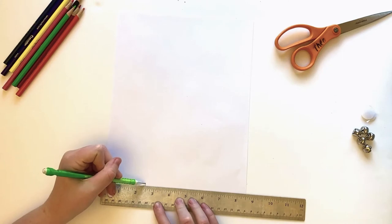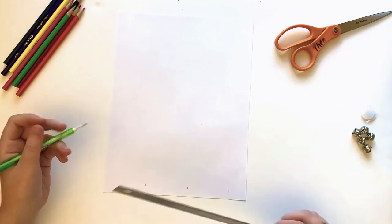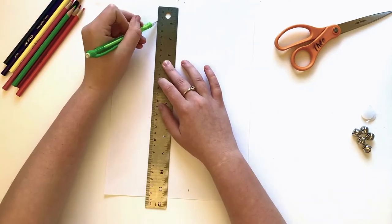Using a sheet of paper and a ruler, draw three marks, each one two and a half inches apart, on the shortest side of your paper.